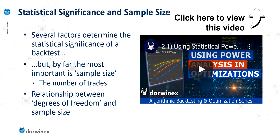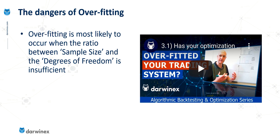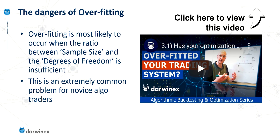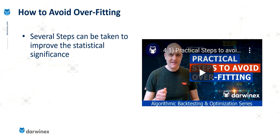I mentioned overfitting — let's look at this in a little bit more detail. This is likely to occur when the ratio of sample size to degrees of freedom is insufficient to give us statistical significance, and this is a really common problem for novice algo traders. For more information about why overfitting occurs, which leads to a system that does not perform well in a live account, you can click on the link here. What traders are most interested in is how to avoid overfitting, and there are several steps traders can take to improve statistical significance and get much more reliable backtests and optimisations.